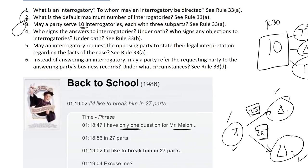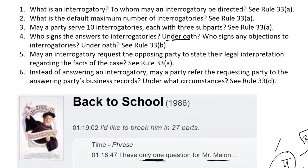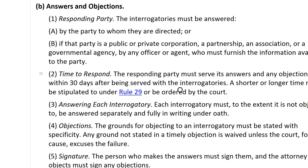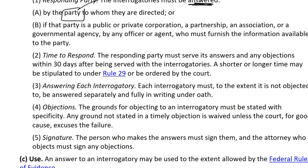Question four is important. Who signs the answers to interrogatories under oath? Who signs any objections? See Rule 33B. The answers to the interrogatories are done by the party to whom they're directed. However, any objections that are made are going to be signed by the attorney. If there's no attorney and the party is acting pro se, then any objections are signed by the party.